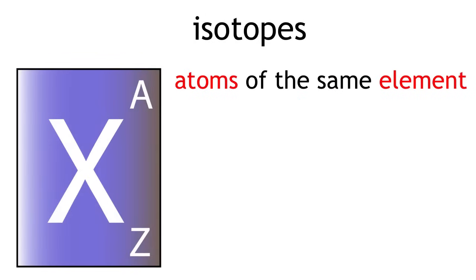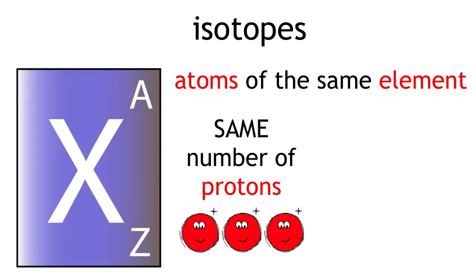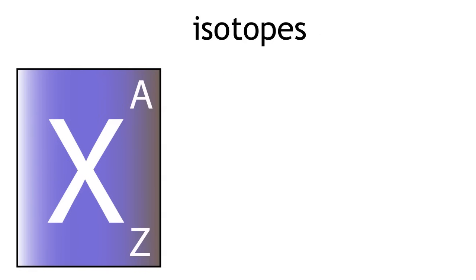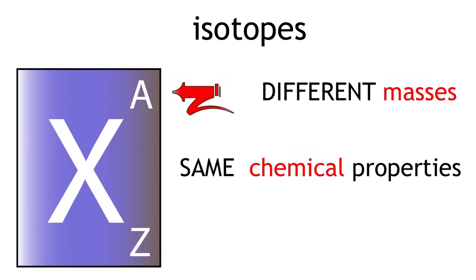So isotopes are the same element with the same number of protons but a different number of neutrons. They have different masses but their chemical properties are exactly the same.